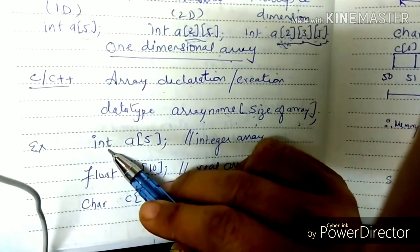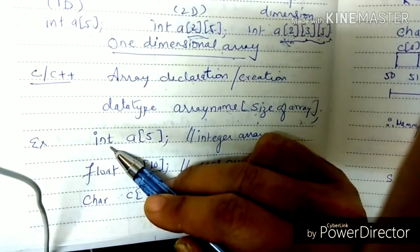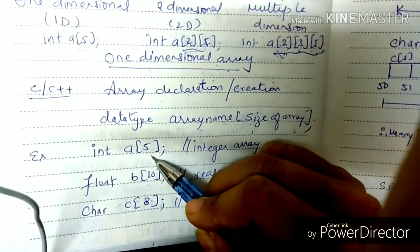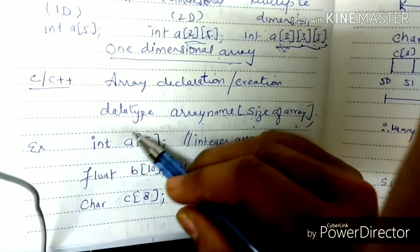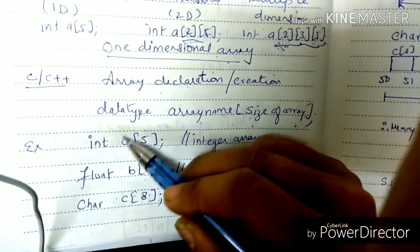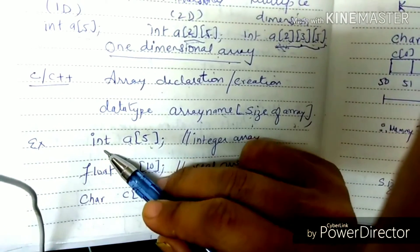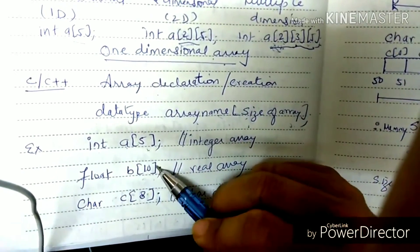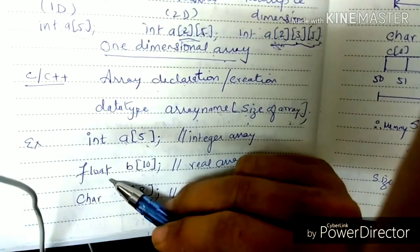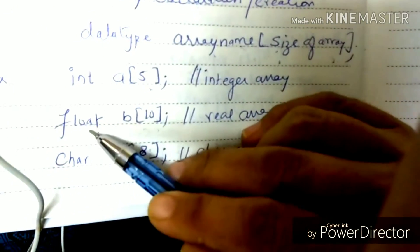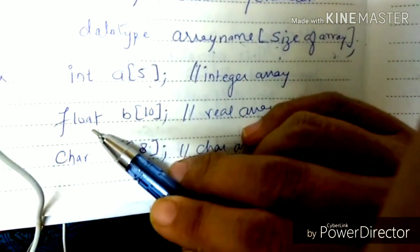For example, if the data type is int (integer), the name of the array is 'a', and the size is 5 — so we create an array of 5 integer values. All 5 elements are of integer type. If we write float B[10], then 10 numbers are of float type. Float means decimal point numbers, like 2.5, 3.5.